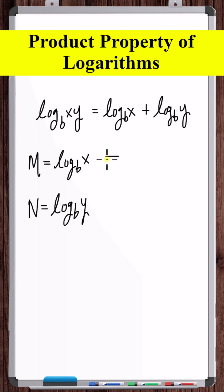then we know that these equations are equivalent to saying that b to the m is equal to x and b to the n is equal to y.